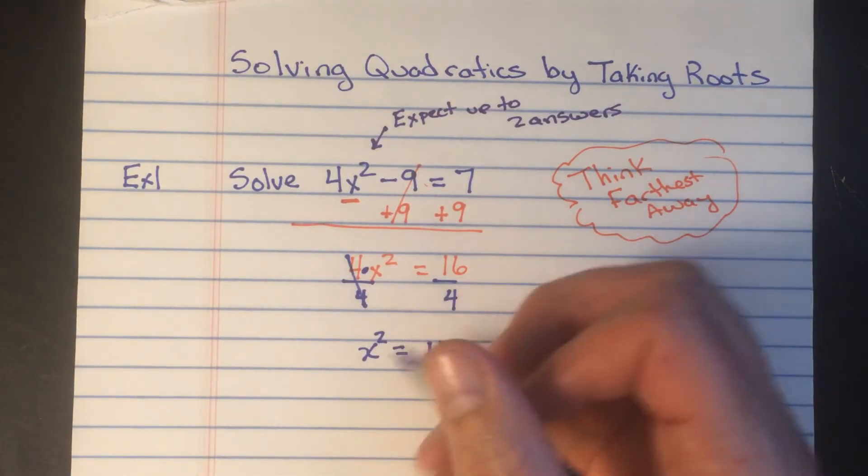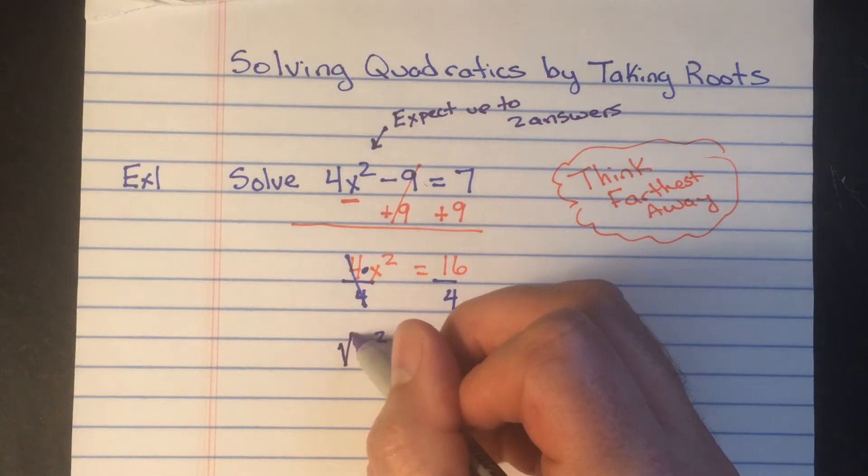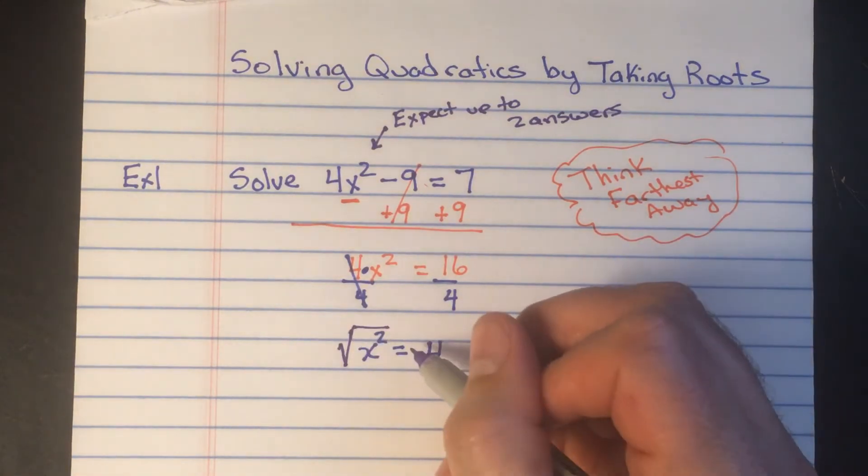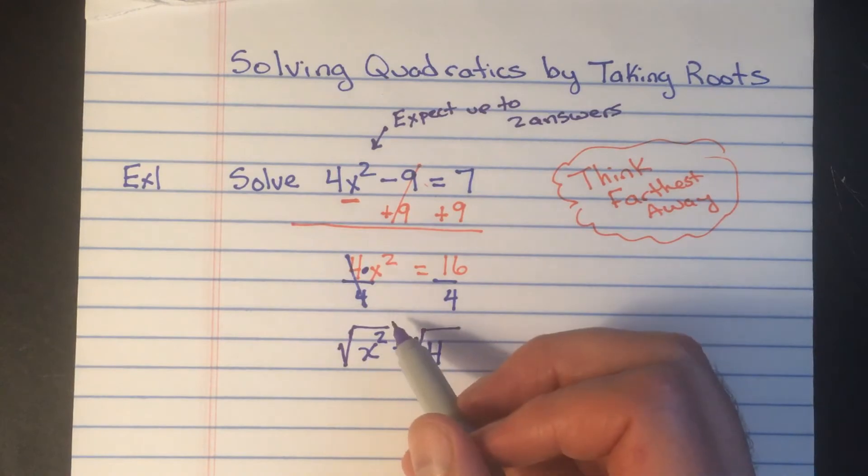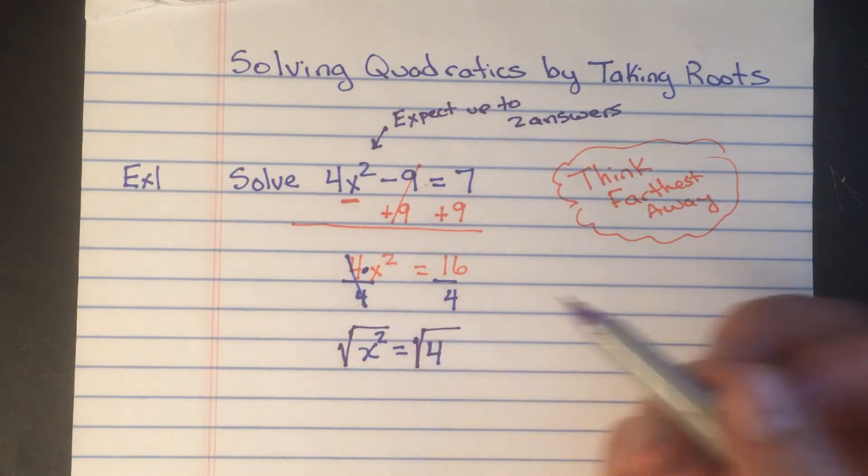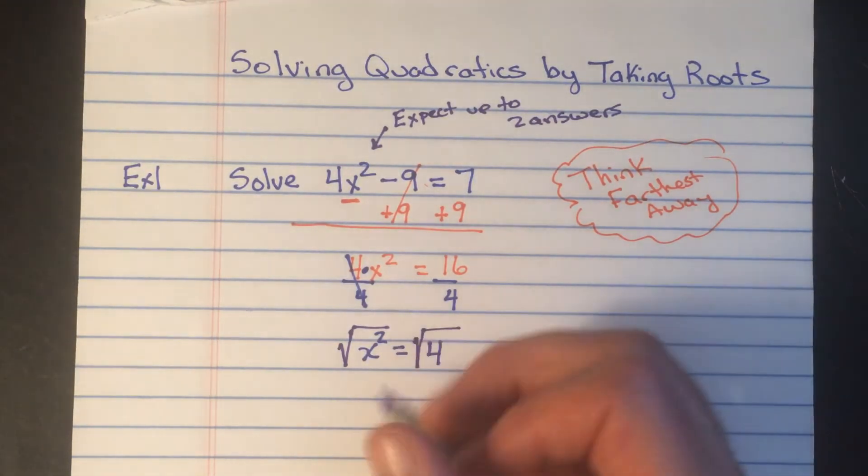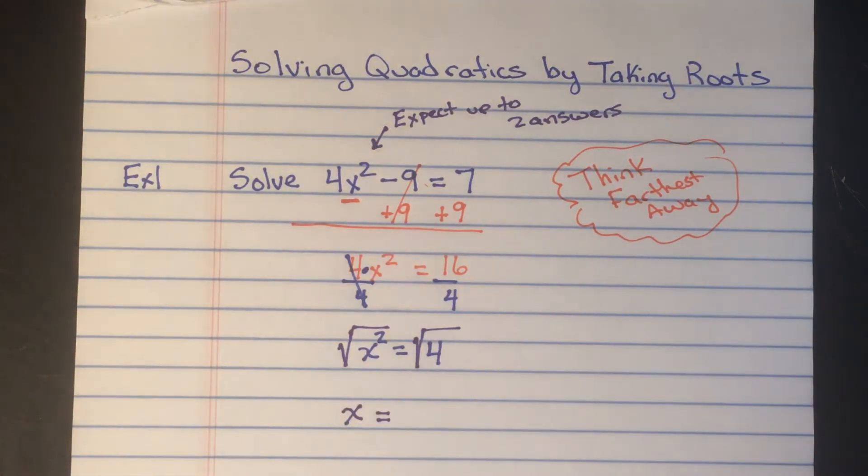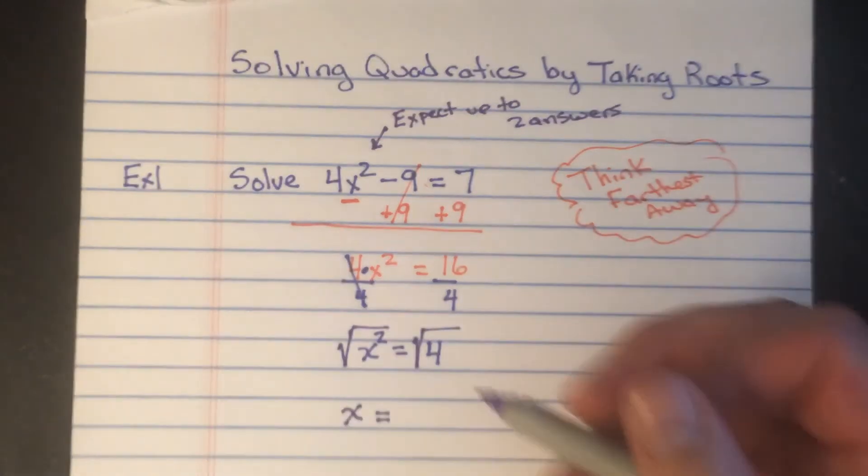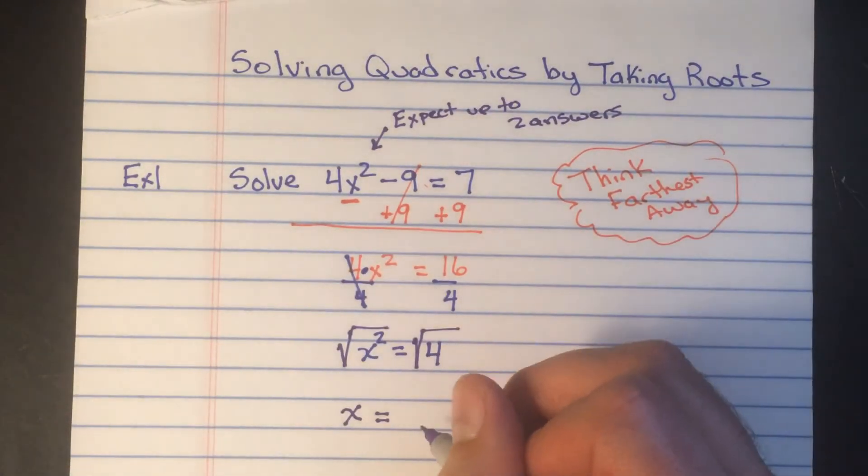Now in math to undo a squared we're gonna take this square root symbol to both sides and whatever I do to one side I'm gonna do the other. Now the square root of x squared is basically saying well what times itself would give me x squared, and the answer to that is x. On this side we're asked what times itself gives us four. Now if you type the square root of four in your calculator you would get two.